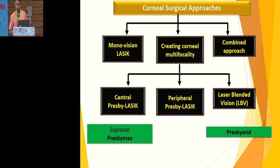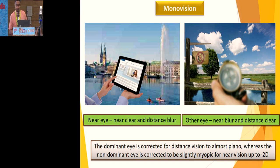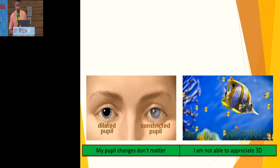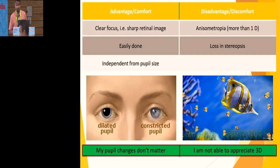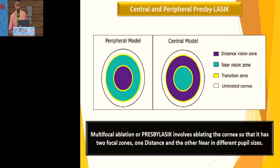Regarding corneal approaches, we have monovision LASIK, corneal multifocality, and combined approaches. In monovision, the near eye is clear for near while distance is blurred, and vice versa. The dominant eye is corrected for distance to near-plano and the non-dominant eye is corrected slightly myopic for near vision up to minus two diopters. Advantages: clear sharp retinal image, independent of pupil size. Disadvantage: anisometropia more than one diopter causes problems, and stereopsis is lost.